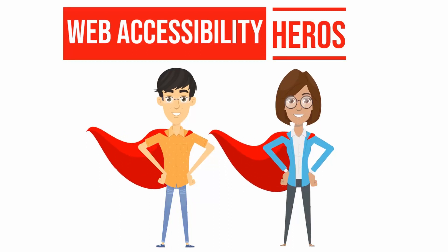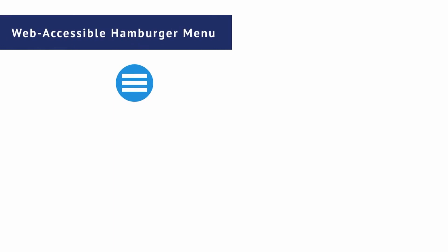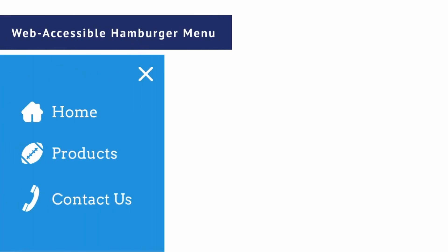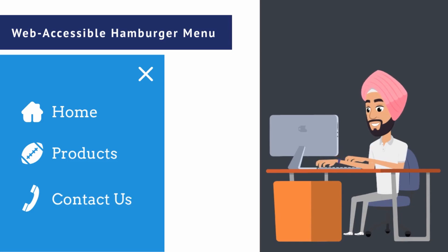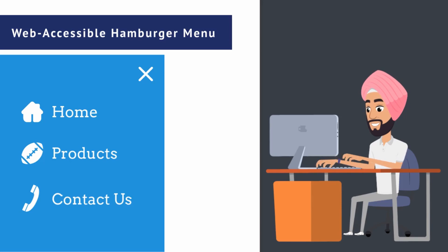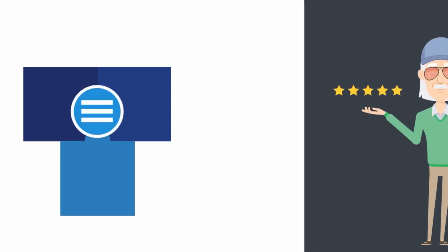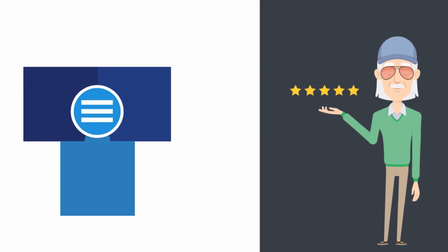Hello Web Accessibility Heroes. Today we will make hamburger menus web accessible. Hamburger menus or vertical sliding menus are commonly used for cell phones and tablet designs. This sleek design is adopted by almost all organizations and developers have done great work with respect to animations and sliding transition effects, but they miss one key element: web accessibility for hamburgers. Today, we will add that last piece to make sure that non-sighted users can also access the hamburgers as their sighted peers.